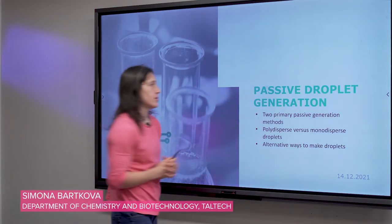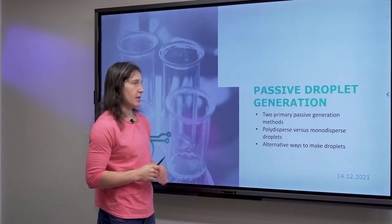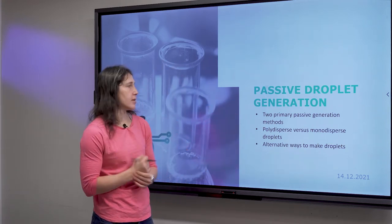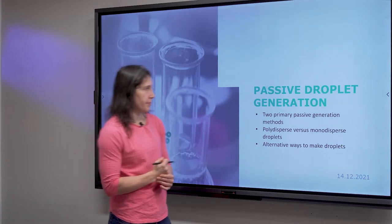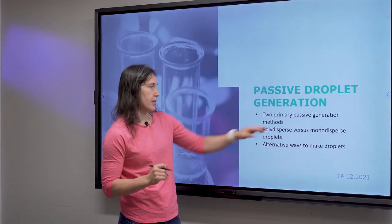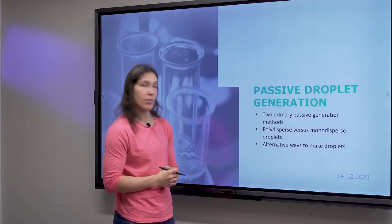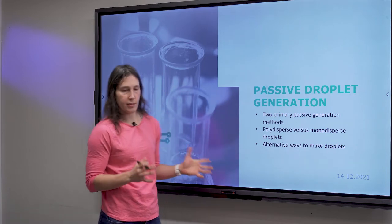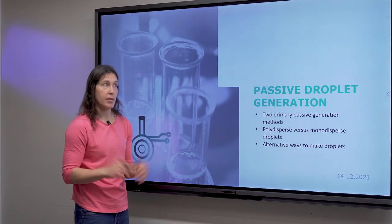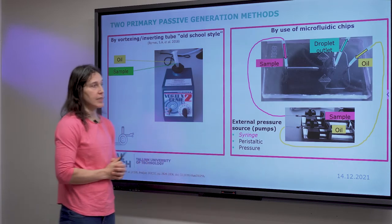I'm going to talk a little bit about passive droplet generation. We'll go through two primary ways of generating droplets passively — called polydispersed versus monodispersed ways to create droplets. And then finally, we'll briefly go through alternative ways to make droplets that you might not commonly think about. So let's dive right into it.